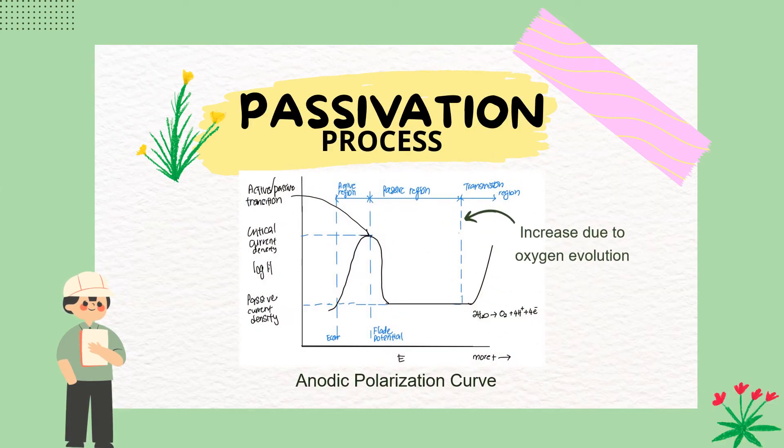The passivation layer formation can be understood by reviewing the anodic polarization curve. Under an applied voltage, anodic polarization curves are created by measuring the net current from an electrode into solution, the corrosion current.